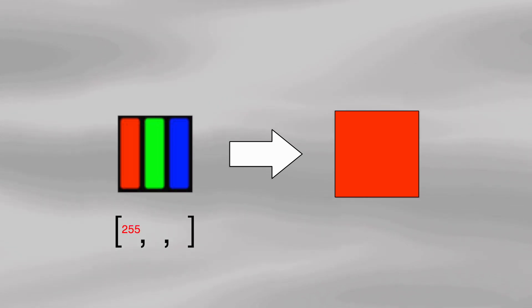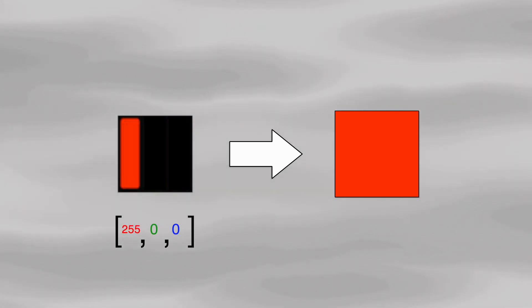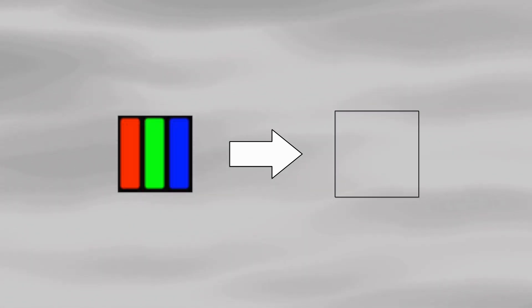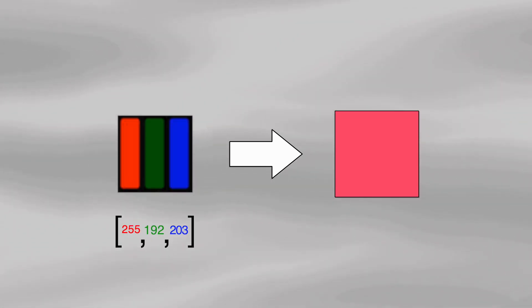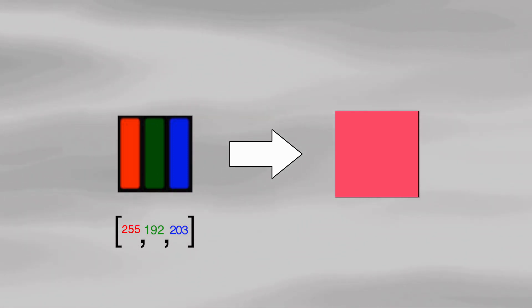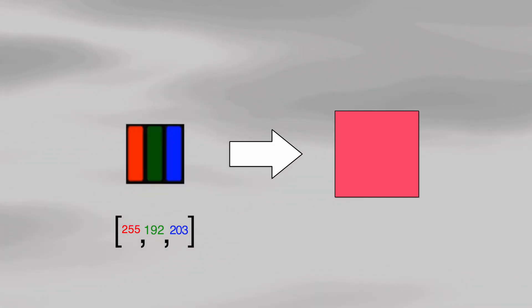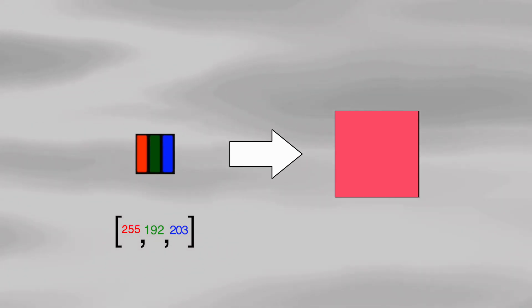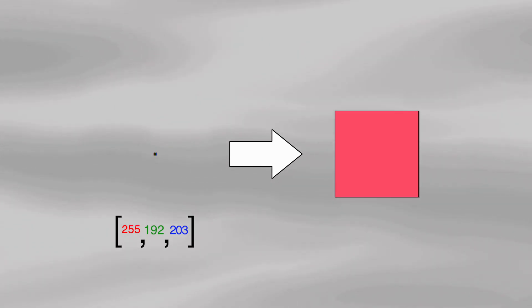If a computer wanted to make the pixel red, it would send 255 to red and zero to green and blue, displaying red. However, if it wanted to show a color like pink, it tells the pixel to turn on the red to its full brightness, but also turn on green and blue to lesser degrees. Up close, you're seeing three light bulbs — this doesn't look like pink. But since these pixels are so small, as we zoom out, it actually tricks our eyes into seeing pink.